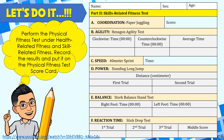Part 2 is skill-related fitness. Coordination — paper juggling: count how many taps you make, ensuring the crumpled paper passes above your head. Agility — hexagon agility test: you have 2 sets, clockwise and counter-clockwise; get the time in seconds and calculate the average. Speed — 40-meter sprint: measure 40 meters in an open area, run as fast as you can, and record your time at the finish line. Power — standing long jump: 2 trials, get the distance in centimeters. Balance — stork balance stand test: get the time on the right and left. Reaction time — stick drop test: do it 3 times, measure in centimeters, and find the middle score.